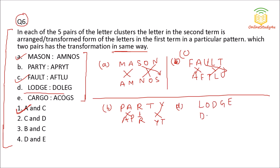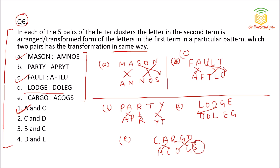Option D shows a totally different arrangement — the middle term comes first. And in option E, A and C are interchanged and G and O are interchanged, but one letter changes to a different letter entirely, so no common transformation with others. Only A and C share the same kind of transformation, so A and C is the correct answer.